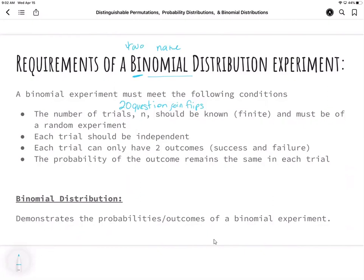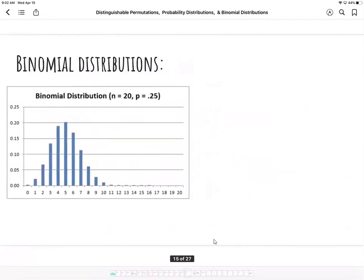And a binomial distribution is just like the distributions we've seen. It's just going to demonstrate the probabilities or outcomes of conducting a binomial experiment. They look very similar to the normal distributions, as you'll see.